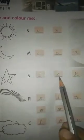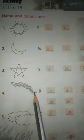Three, we have Star. So what is this? This is Star, so you write S-T-A-R Star. Number four, what is this? This is Rainbow, this is Rainbow.